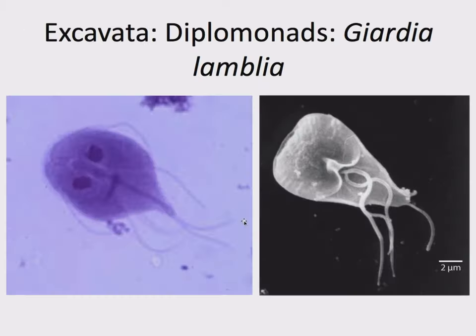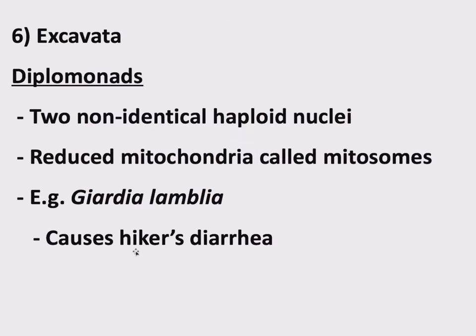Giardia lamblia is responsible for hiker's diarrhea. So if you're going hiking in the mountains and you see a beautiful clear stream of water, it may look beautiful and clear, but a deer may have pooped in it upstream. There may be Giardia in there — you drink that and you may be suffering from the same thing that deer did. So Giardia lamblia is a notable member of diplomonads.